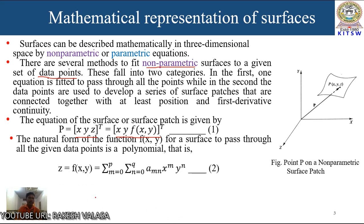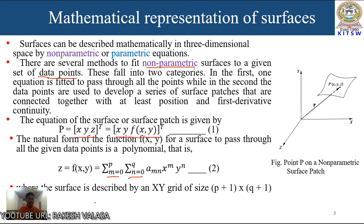That is, z equal to f(x, y). We can also write f(x, y) as a polynomial: summation M equal to 0 to p, summation N equal to 0 to q, A(M,N) times x power M times y power N. This is equation number 2. Here, the surface is described by an x-y grid, and the grid size is (p+1) into (q+1) control points.